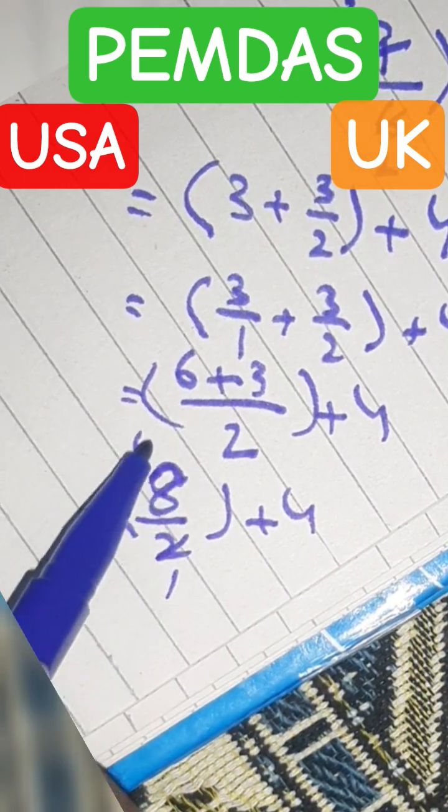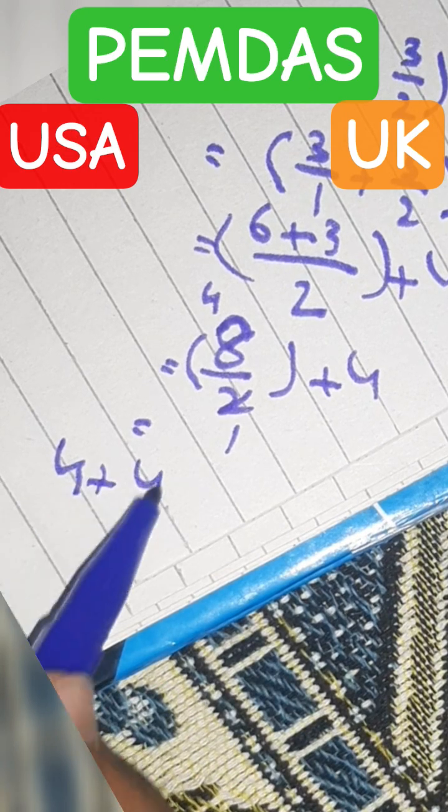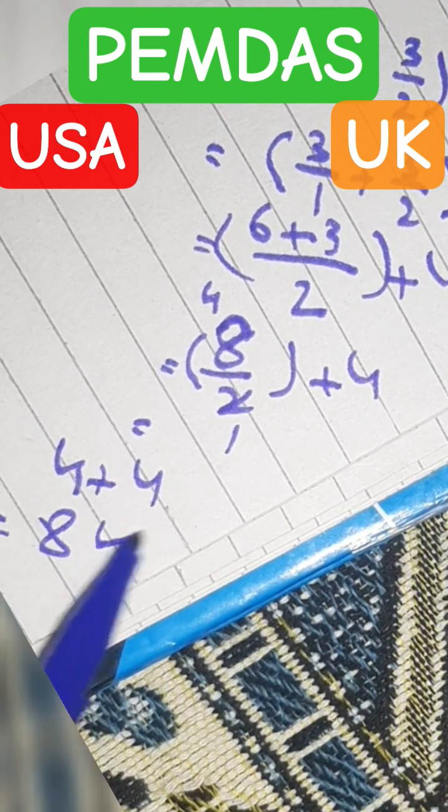Two cancels into four, and finally four plus four gives us eight. This is the right answer.